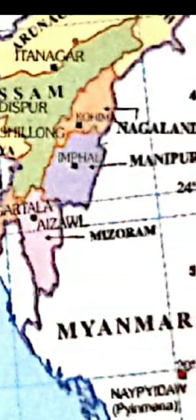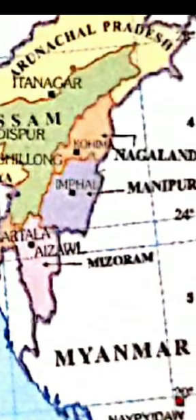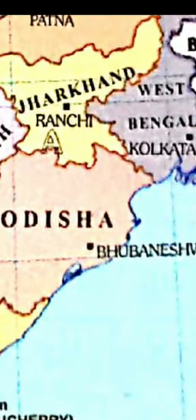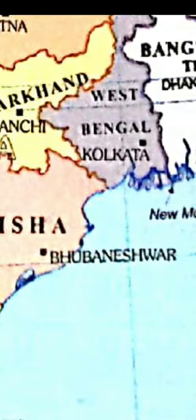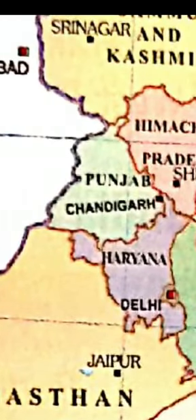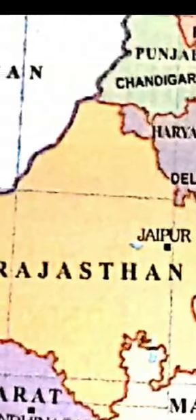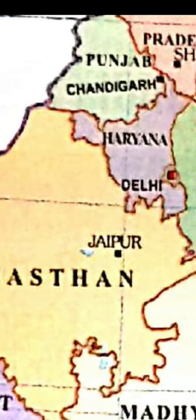N for Nagaland — its capital is Kohima. O for Odisha — its capital is Bhubaneswar. P for Punjab — its capital is Chandigarh. R for Rajasthan — it is the largest state of India according to area, and its capital is Jaipur.